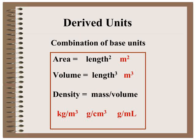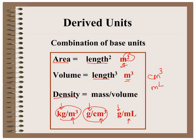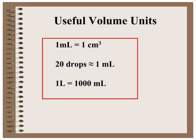You'll also be using some derived units. If area is length squared, then taking the SI unit for length — the meter — and squaring it gives us area. Volume is cubic meters, and also cubic centimeters and milliliters. When you look at density, you can have many different mass and volume values, but all of these are mass-to-volume units. Some helpful volume units to know: one milliliter is equivalent to one cubic centimeter, twenty drops is approximately equal to one milliliter, and one liter is one thousand milliliters.